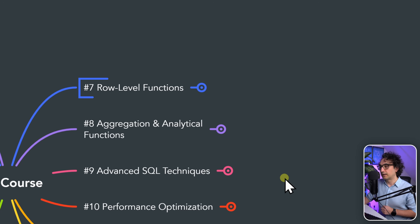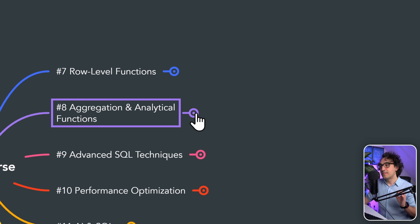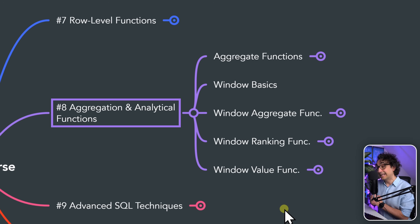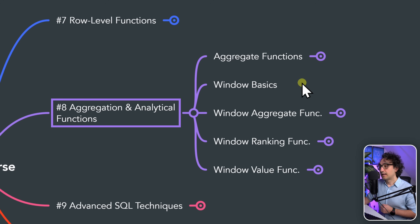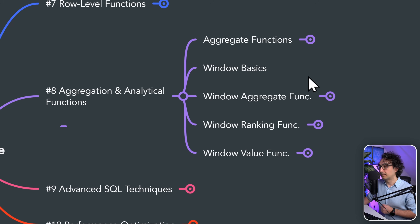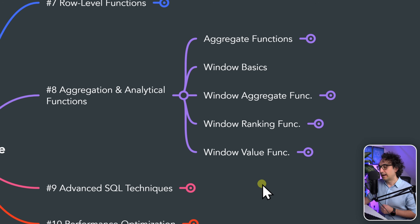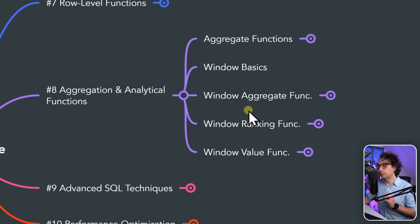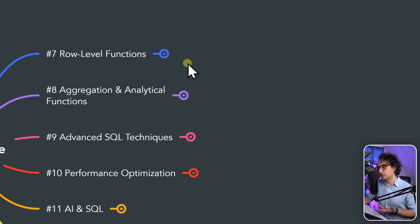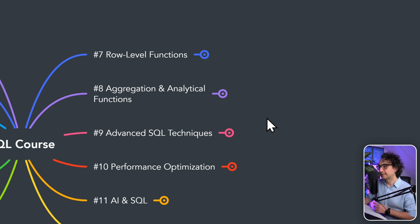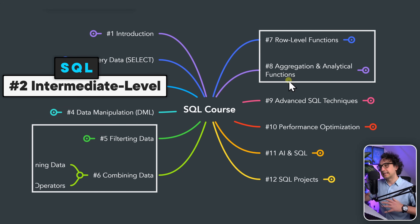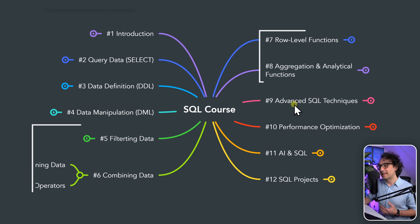After learning data transformations, you'll learn how to do data analytics and aggregations using SQL functions. We start with the basic aggregate functions and then deep dive into window functions and analytical functions, including aggregate, ranking, and value functions. These are essential tools for data analysts and data scientists doing analytics tasks in SQL.